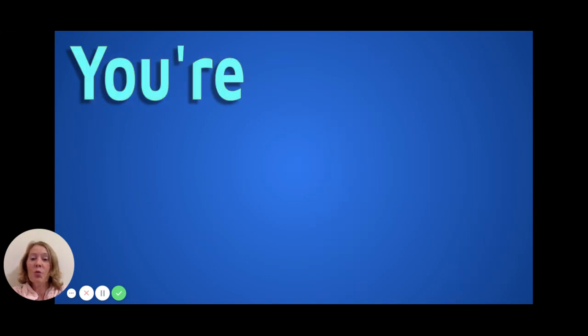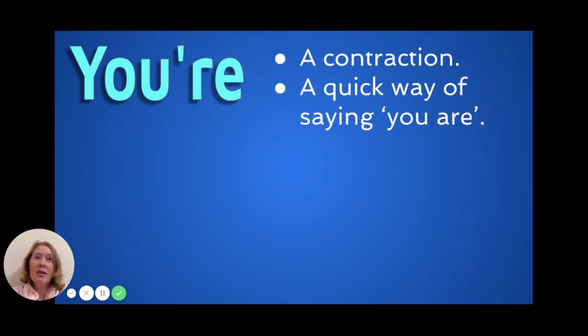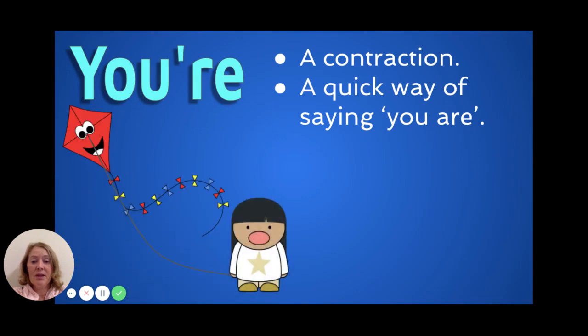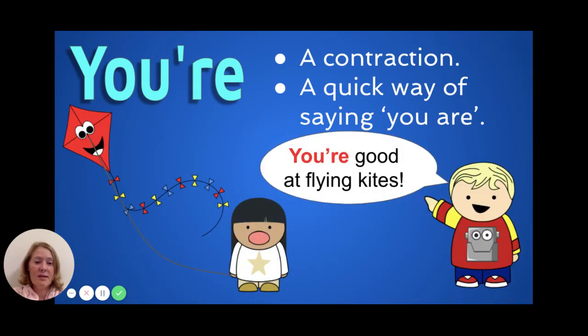You're, spelled Y-O-U with an apostrophe R-E, tells me that it's a contraction. The apostrophe tells me that there are some letters missing. It's a quick way of saying you are. Here's the girl flying the kite and the young boy saying you're good at flying kites.